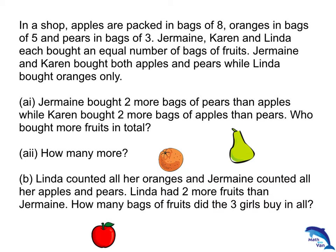Apples are packed in bags of 8, oranges in bags of 5, and pears in bags of 3. Jermaine, Karen, and Linda each bought an equal number of bags of fruits. Jermaine and Karen bought both apples and pears while Linda bought oranges only. Jermaine bought 2 more bags of pears than apples, while Karen bought 2 more bags of apples than pears. Who bought more fruits in total? How many more?